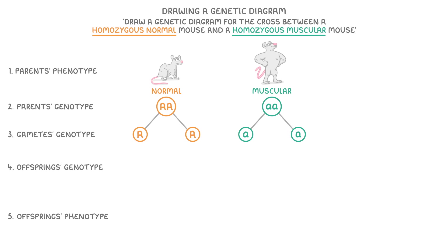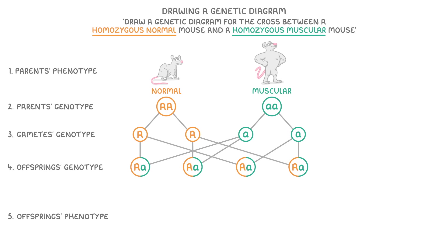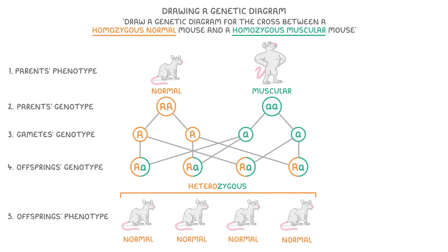Now to find the offspring's genotypes, we have to do all the possible combinations of the two parents' gametes. So for one of these, we would take the capital A gamete from the normal mouse and combine it with a lowercase a from the muscular mouse to give us a capital A, lowercase a genotype. We do this exact same thing three more times so that we end up with the genotypes of all four offspring. This particular case is a bit boring though, because all of the offspring are heterozygous — they have one allele of each type — and because normal muscles are dominant to large muscles, all the heterozygous offspring will have the normal phenotype.